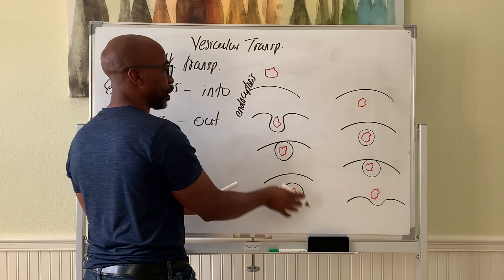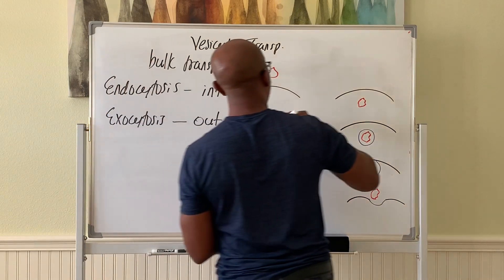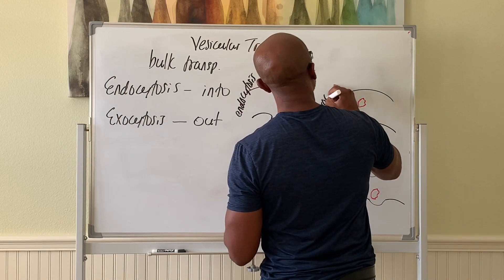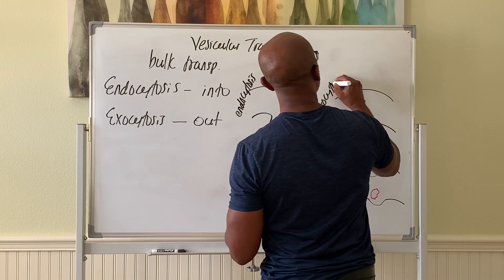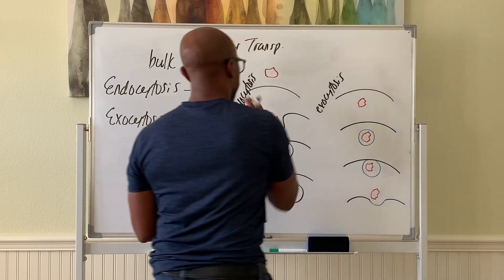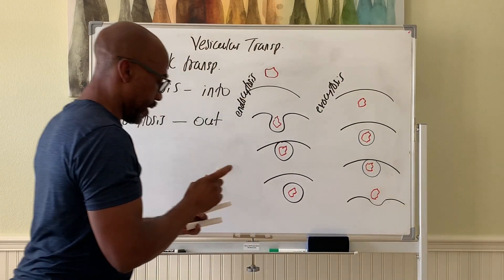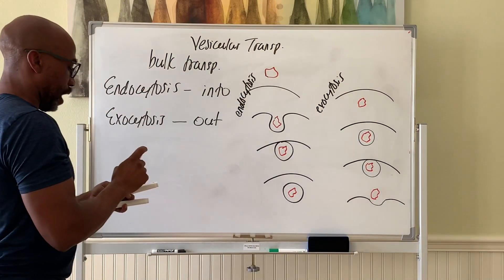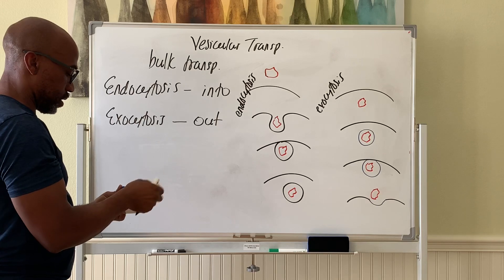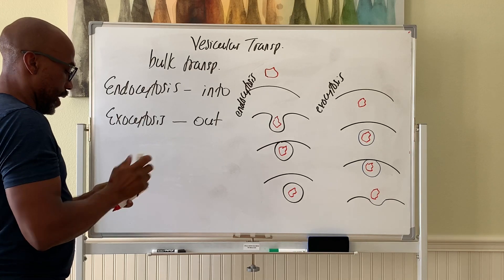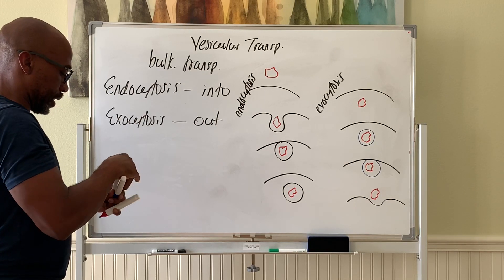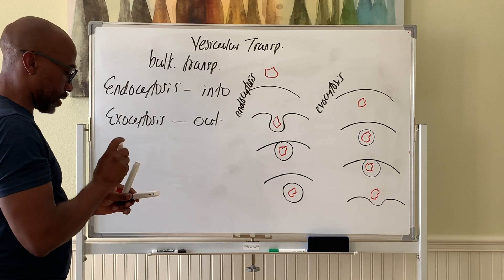So these two processes can go opposite ways — exocytosis and endocytosis. Now there are a couple of forms of endocytosis. Let's discuss them.